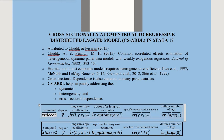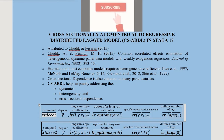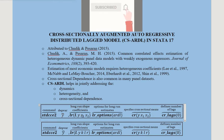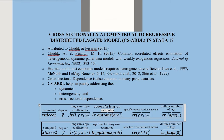This is the syntax. We have a keyword for the command which is xtdcce2, where CCE stands for Common Correlated Effects and 2 refers to the version of the command. There have been some upgrades to this command. Then comes the dependent variable, followed by the long-run slope coefficients — the lagged dependent variable and the independent variables — and then the option specifying which estimation technique to use for the long-run coefficients.